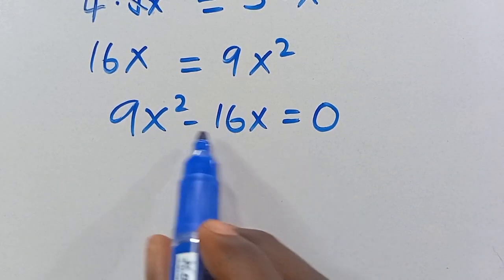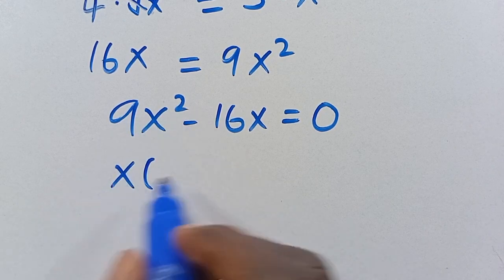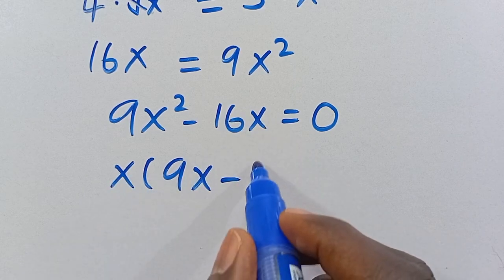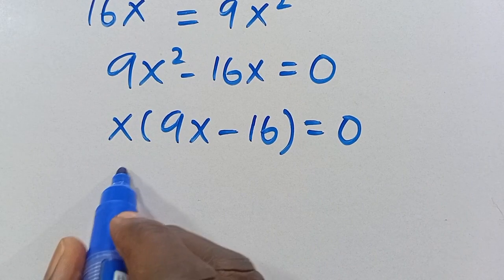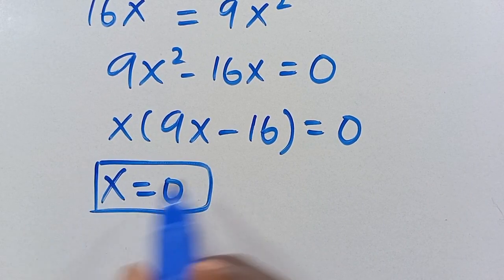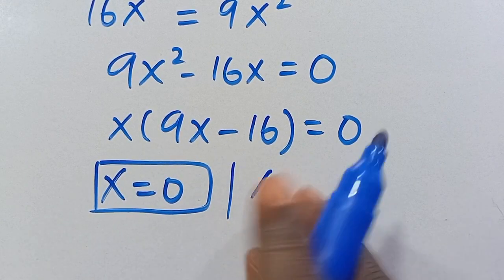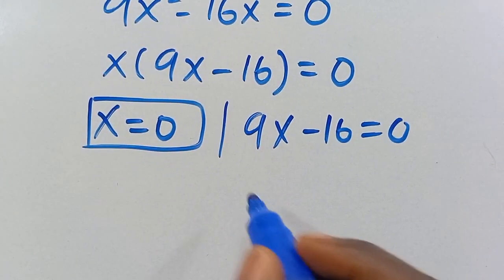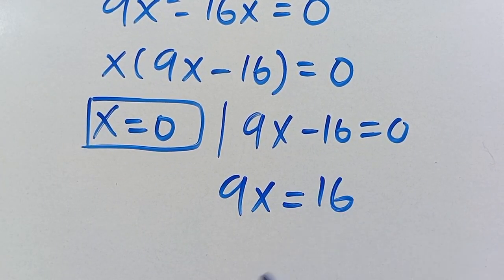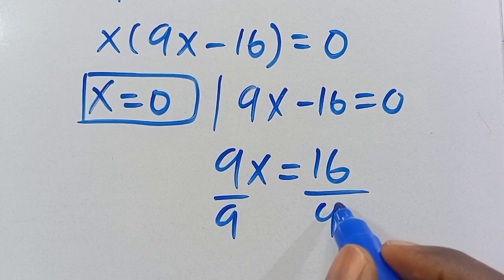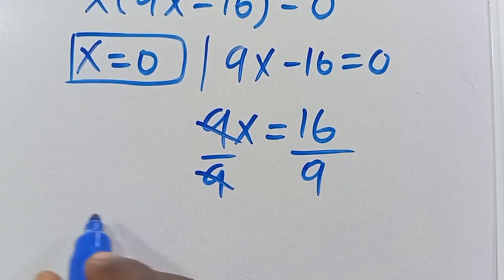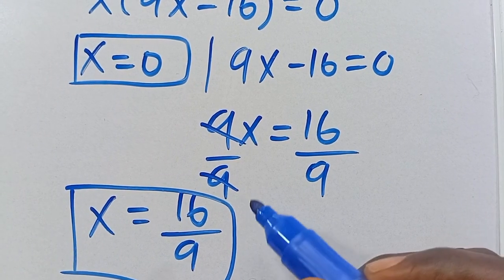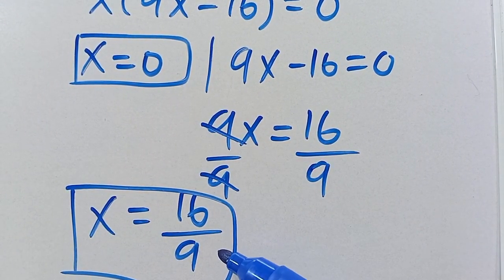Factoring out x from 9x² - 16x = 0, we get x(9x - 16) = 0. This gives two solutions: x = 0 as the first solution, and 9x - 16 = 0, so 9x = 16, giving x = 16/9 as the second solution.